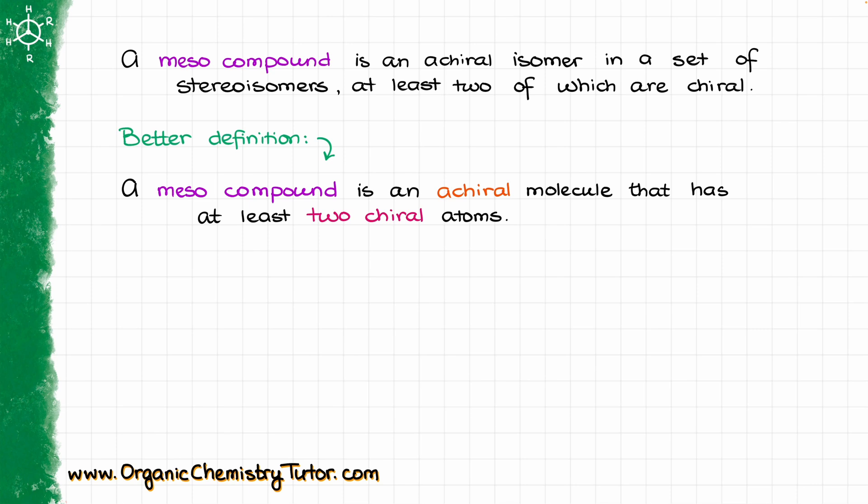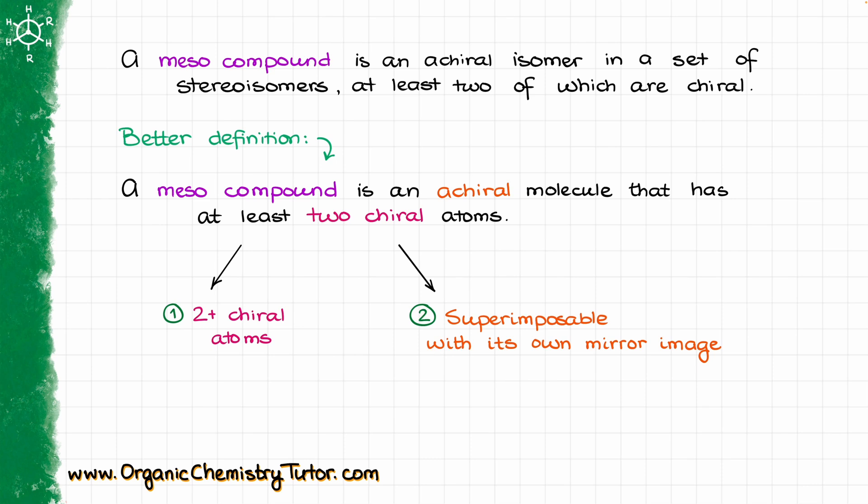That is much easier to stomach. So a meso compound is a substance that needs to fit two criteria. First, it needs to have two or maybe more chiral atoms, and it needs to be achiral, aka superimposable with its own mirror image.